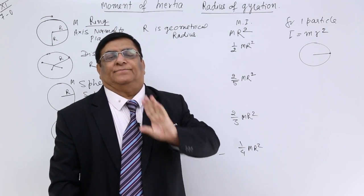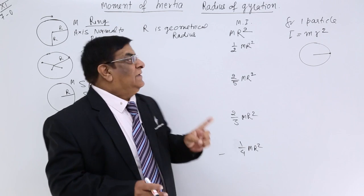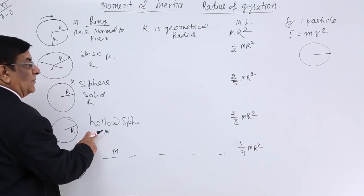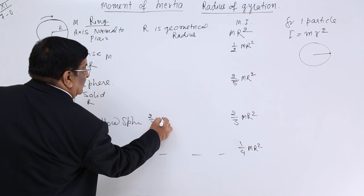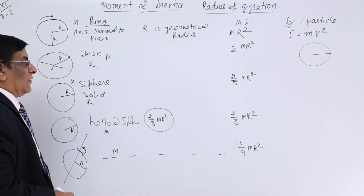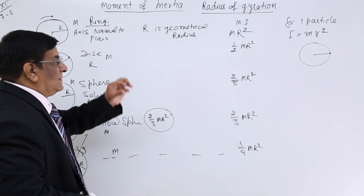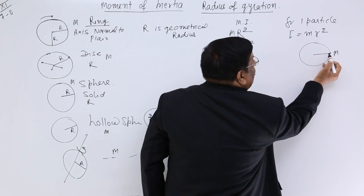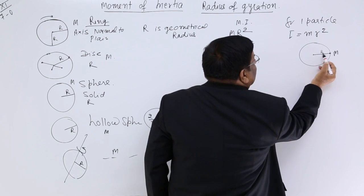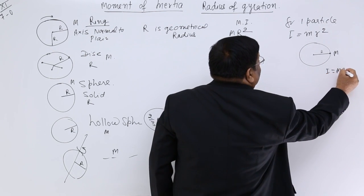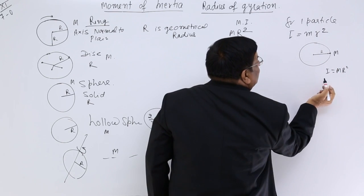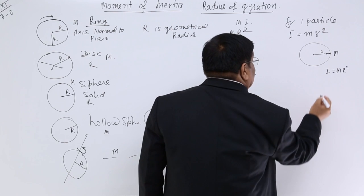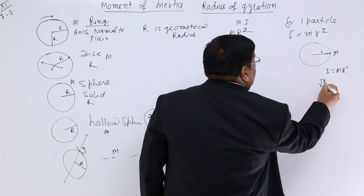Suppose I take a mass m in the shape of a particle and put it at a distance r — its moment of inertia is mr². If I decrease that distance and keep on calculating moment of inertia, I reach a point which is equal to √(2/3) r.